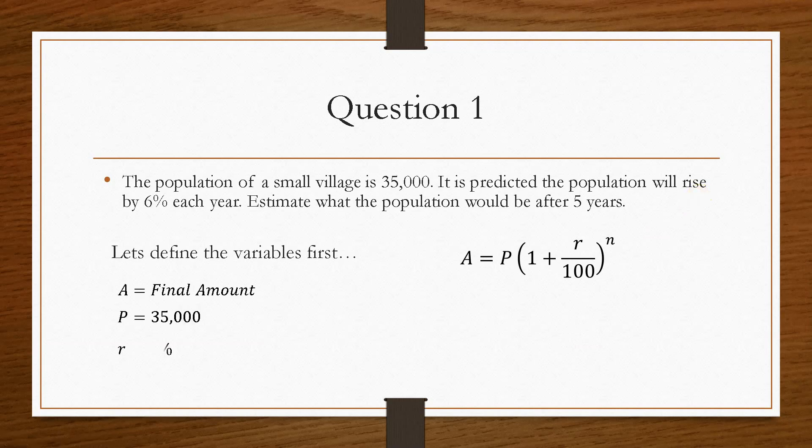We'll define the variables. A is the thing that we want. P is the principal, so that's the original value that it gave us, which is 35,000. We have an increased percentage of 6%, and we are looking for the value after 5 years, so N is 5.